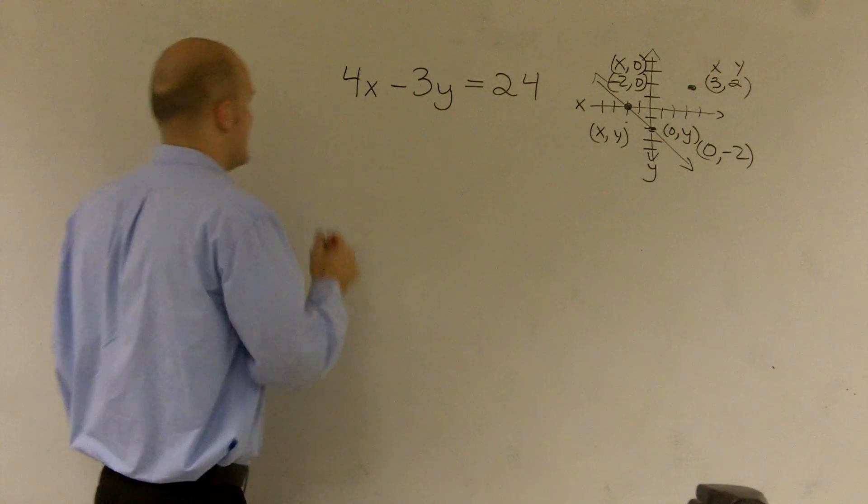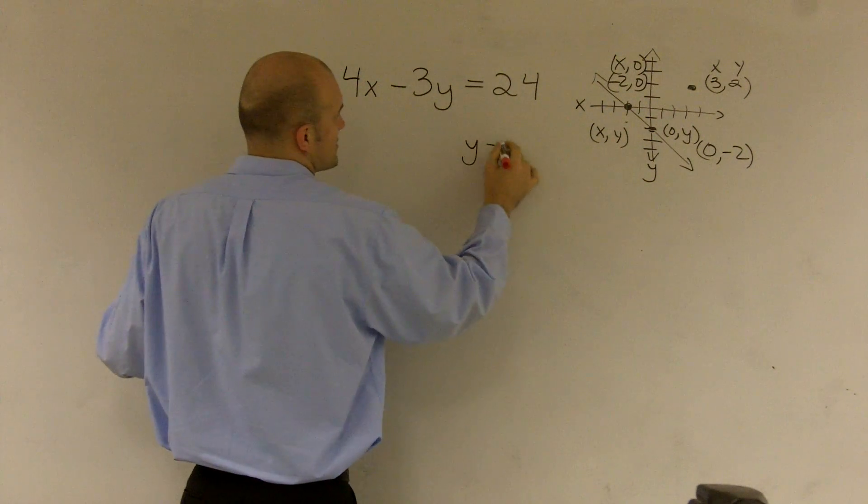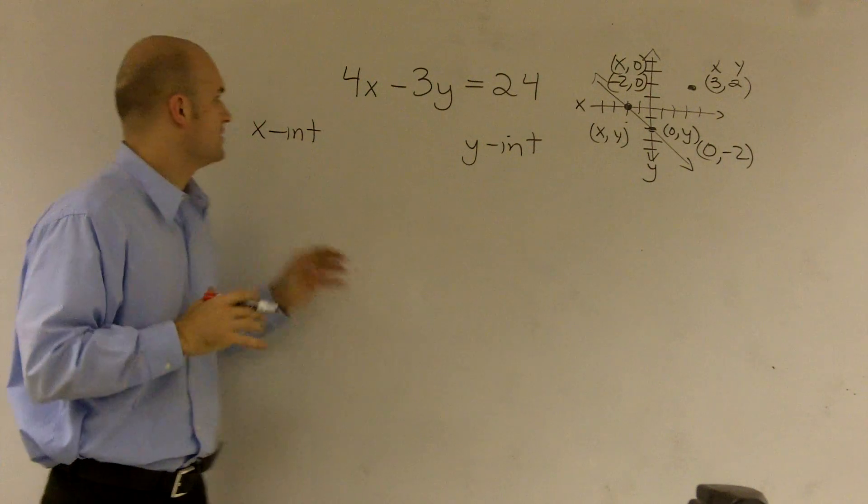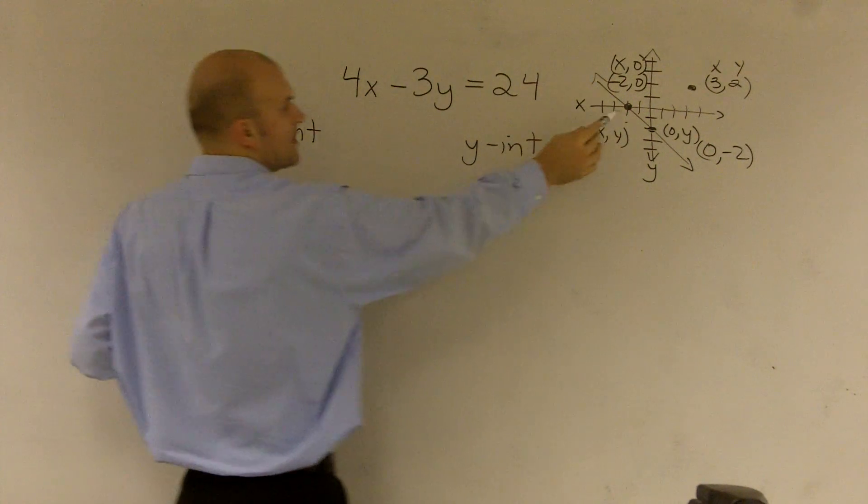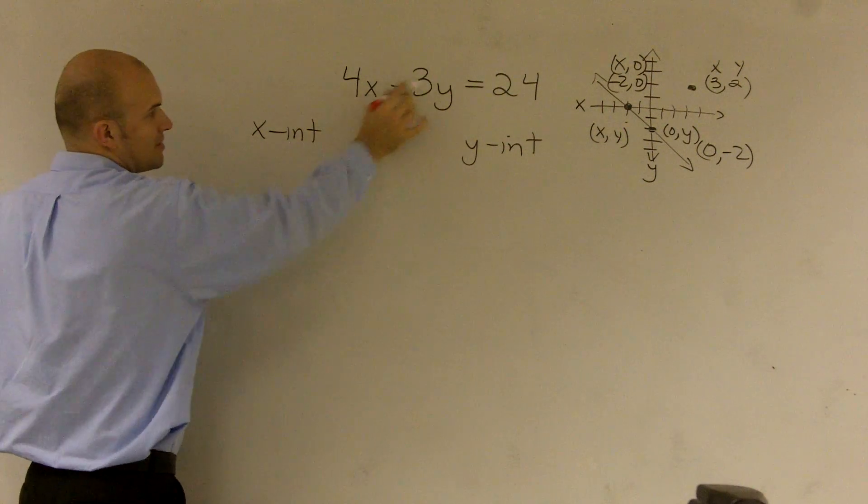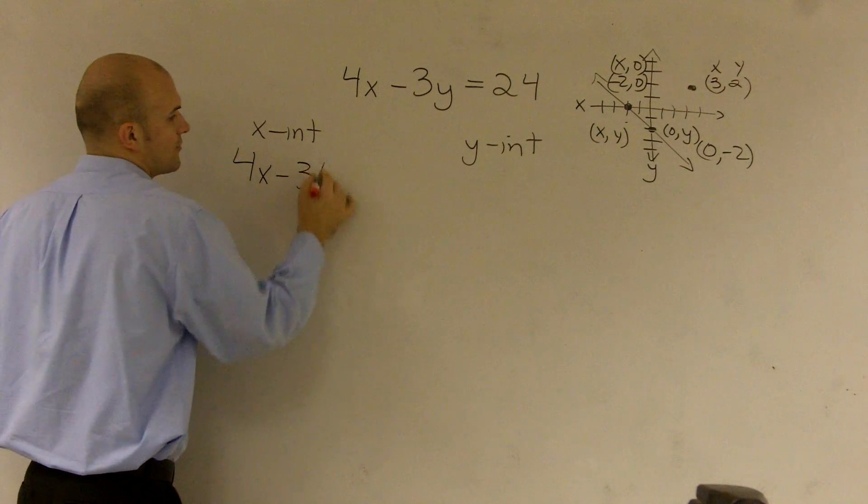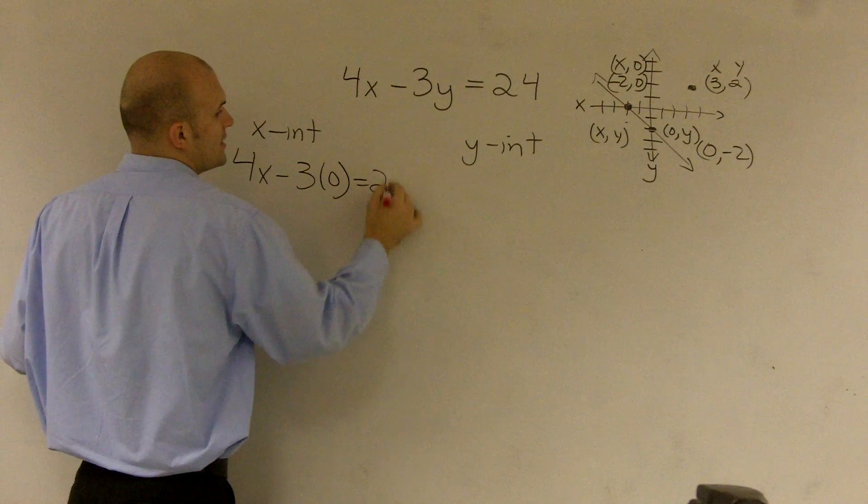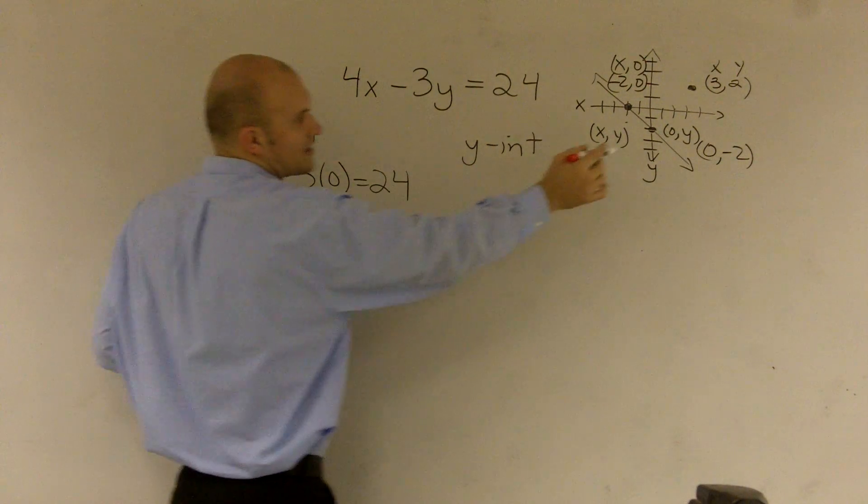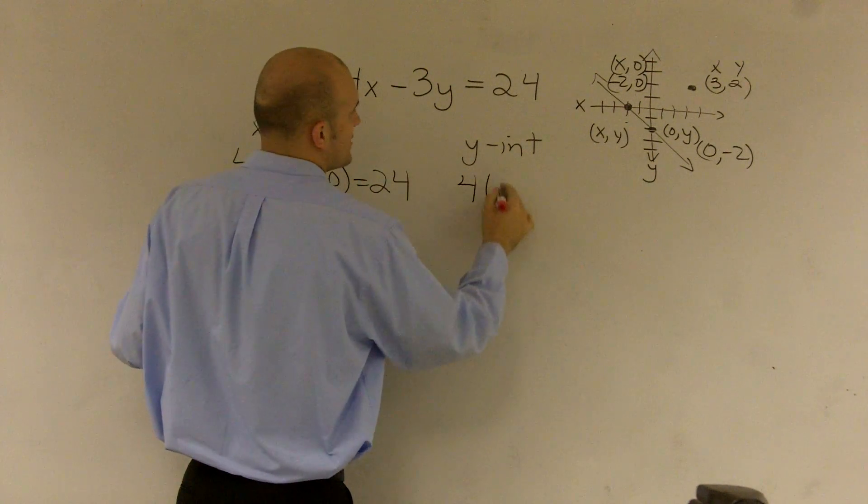So the important thing to understand is, when I want to find my x-intercept and my y-intercept, I'm going to follow a very specific procedure. For the x-intercept, my y is always equal to 0. So therefore, I'm going to plug a 0 into the equation. So 4x minus 3 times 0 equals 24. Then for my y-intercept, I understand that x is always equal to 0. So I'm going to plug a 0 in for my x.